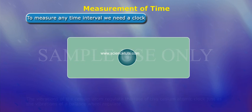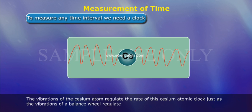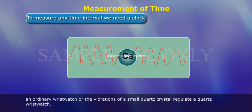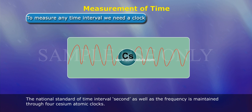The caesium-133 atom's vibrations regulate the rate of the caesium atomic clock, just as the vibrations of a balance wheel regulate an ordinary wristwatch, or the vibrations of a small quartz crystal regulate a quartz wristwatch. The caesium atomic clocks are very accurate. In principle, they provide portable standards. The national standard of time interval, the second, as well as the frequency, is maintained through four caesium atomic clocks.